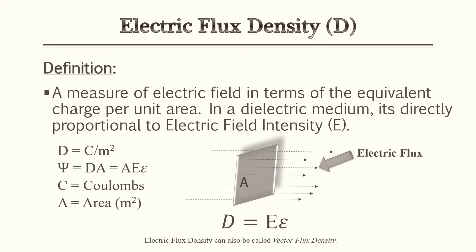To take the metaphor a step further, in a very thick rainstorm you might see a lot of lightning, which is correlated to electric field intensity. So electric field intensity is proportionate to electric flux density. Also be aware that electric flux density can also be referred to as vector flux density — if you see that on a practice problem or exam, they mean the exact same thing.